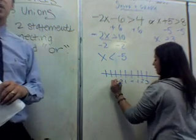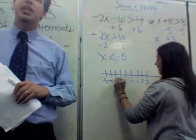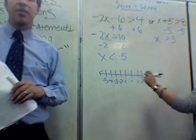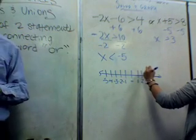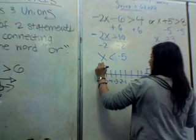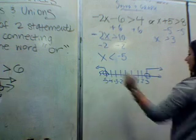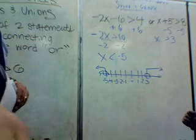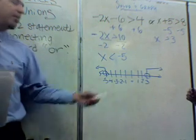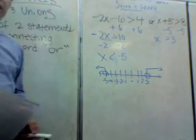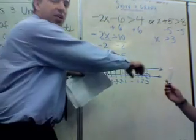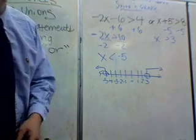Now she's got to graph it on a number line. Let's see if she gets it. We've got less than negative 5 — all the numbers smaller than negative 5, going more negative down the number line. Where's the circle? There she goes. Less than negative 5 is to the left, and greater than 3 is to the right. These are the Harley-Davidson handlebars we're looking for, and she's got it right. Give her a hand — nice job!